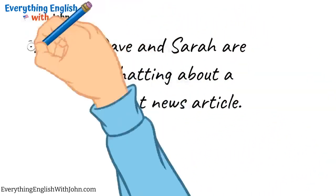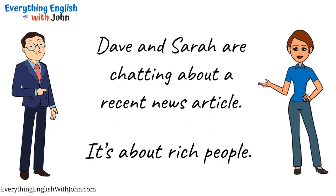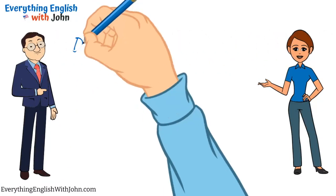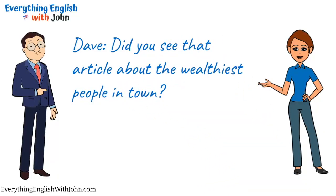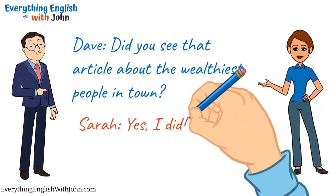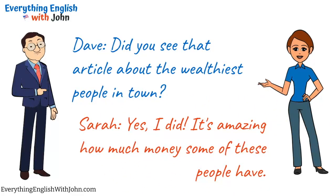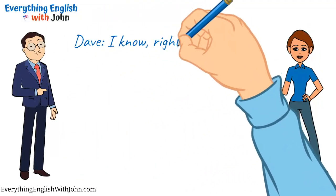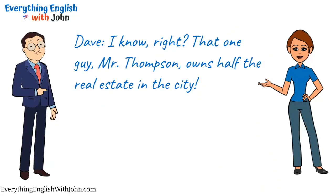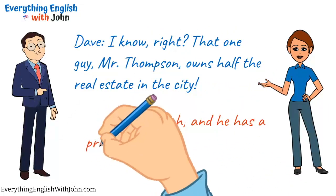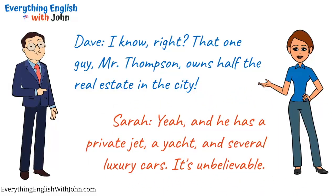Dave and Sarah are chatting about a recent news article. It's about rich people. Did you see that article about the wealthiest people in town? Yes, I did. It's amazing how much money some of these people have. I know, right? That one guy, Mr. Thompson, owns half the real estate in the city. Yeah, and he has a private jet, a yacht, and several luxury cars. It's unbelievable.